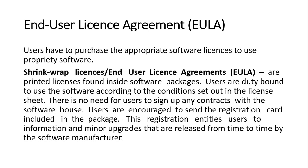The End User License Agreement, or EULA, is a shrink-wrap license. A printed license is found inside software packages, and users are duty bound to use the software according to the conditions set out in the license. There is no need for users to sign contracts with the software house. Users are encouraged to send the registration card included in the package, entitling them to information and minor upgrades from the software manufacturer.